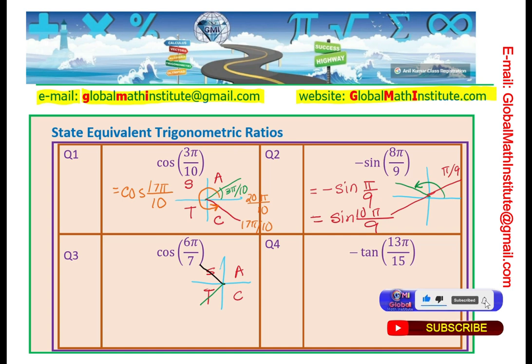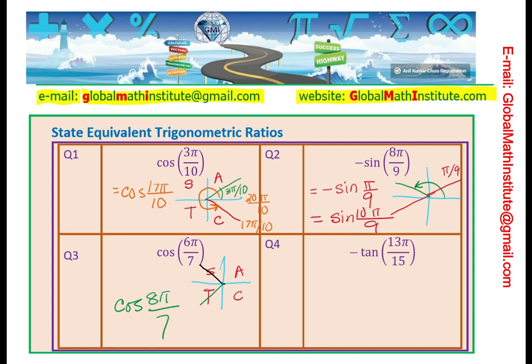So one more than 7. So that will be cos(8π/7). Does it make sense? That simple. So you can very quickly get the answers. You see, both are negative. Perfect.